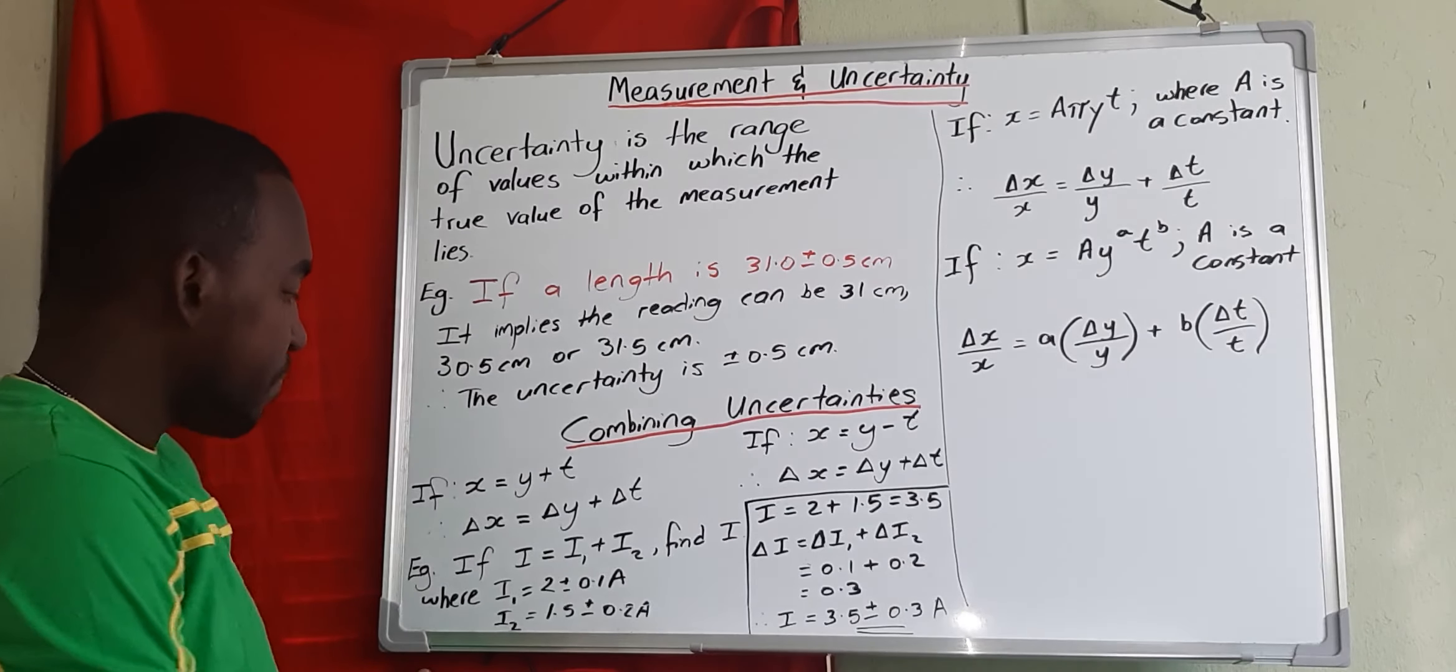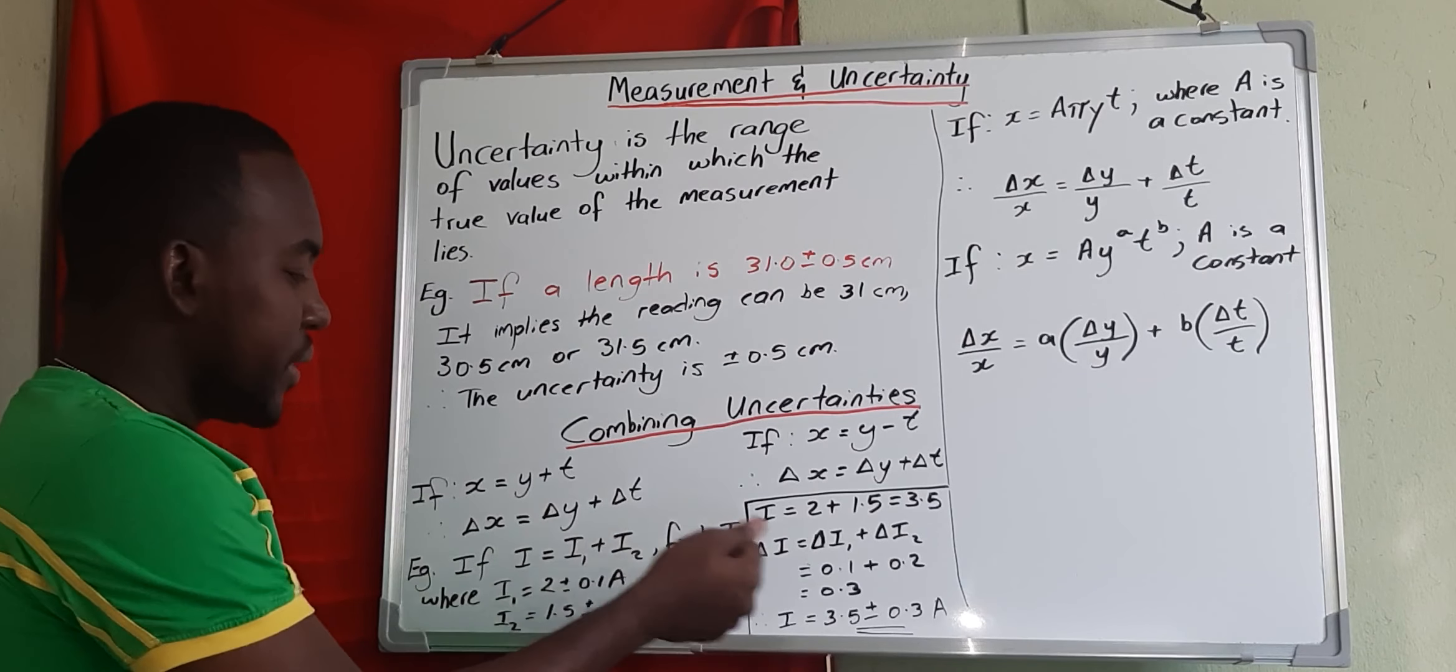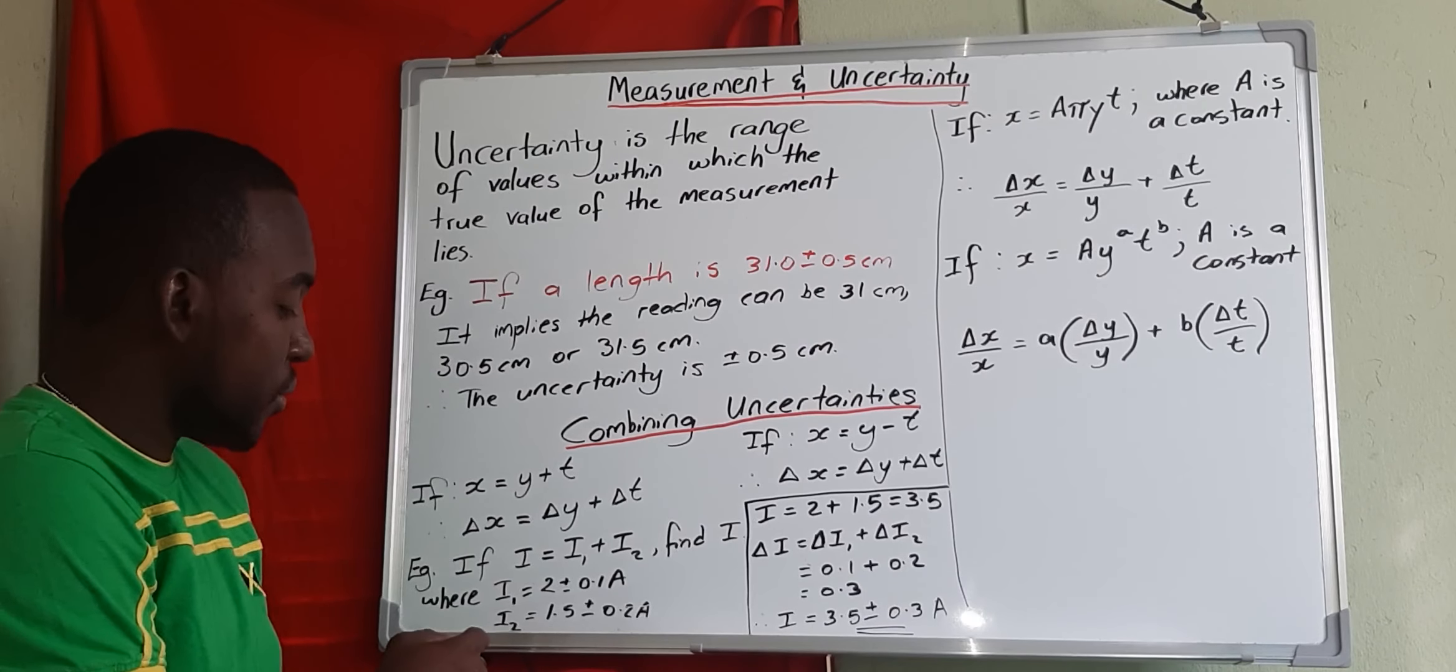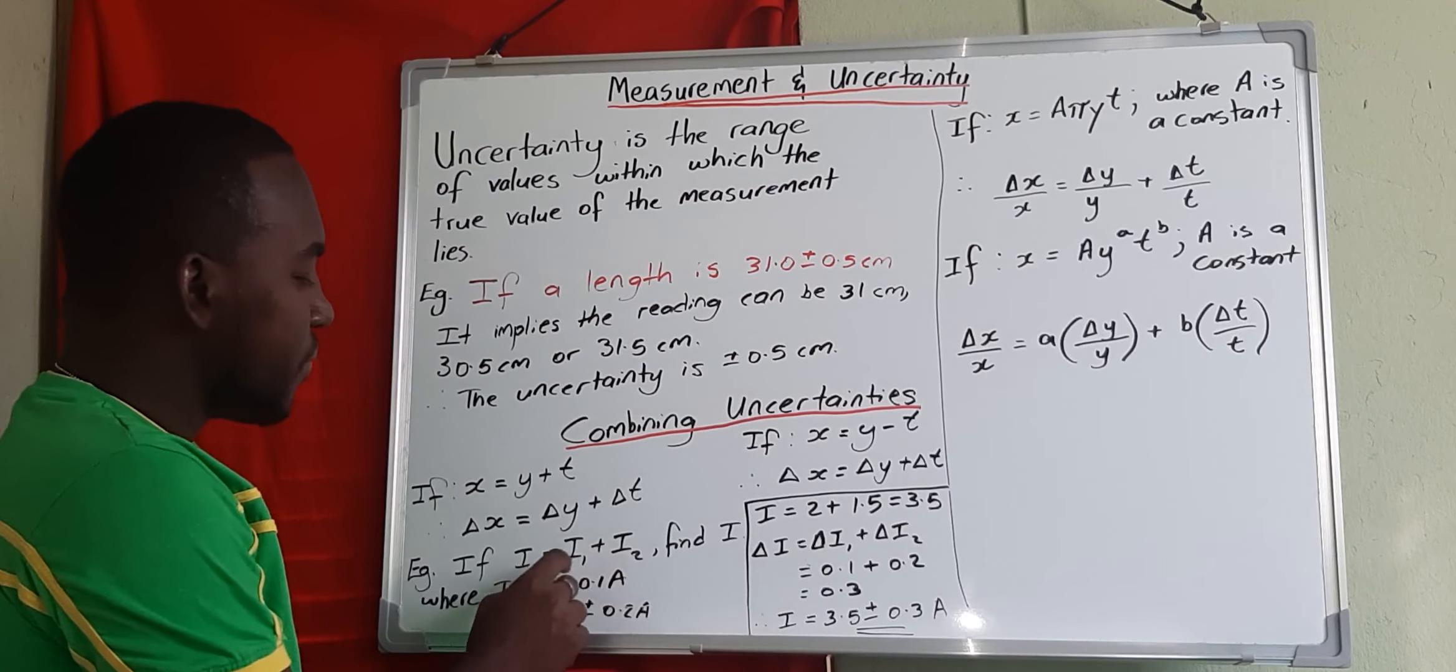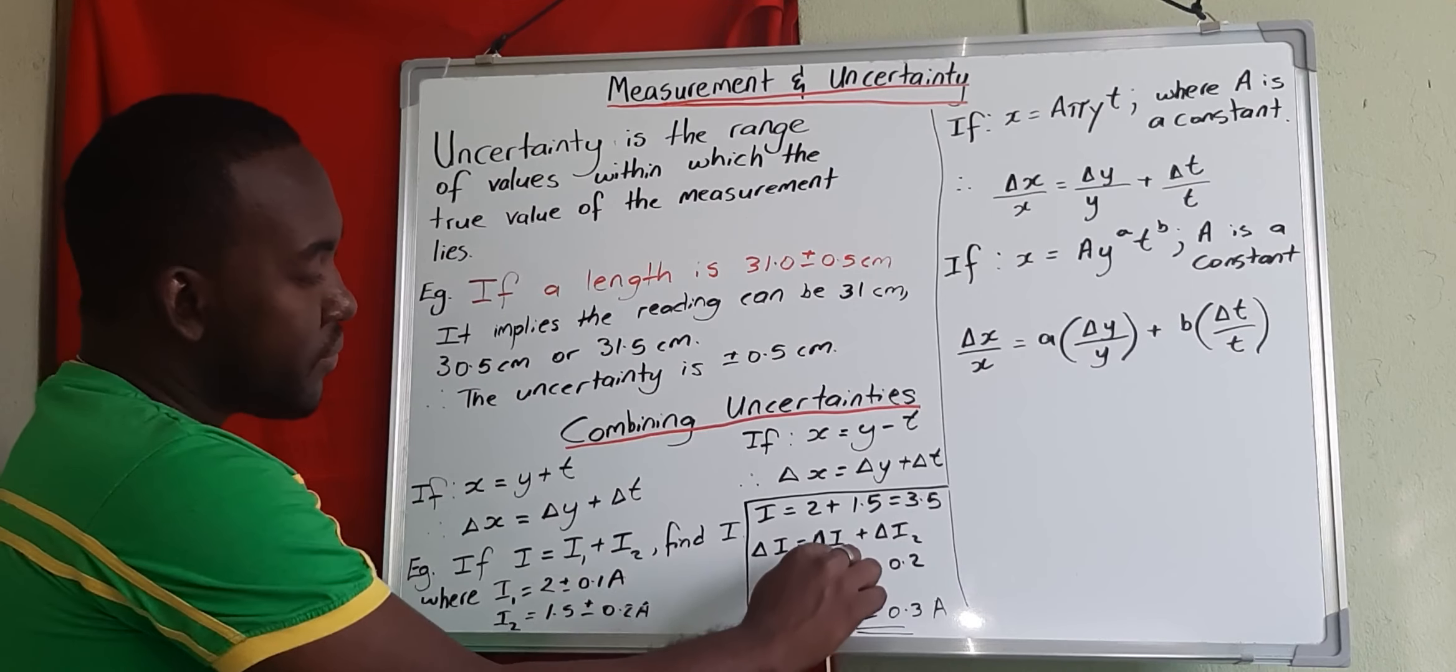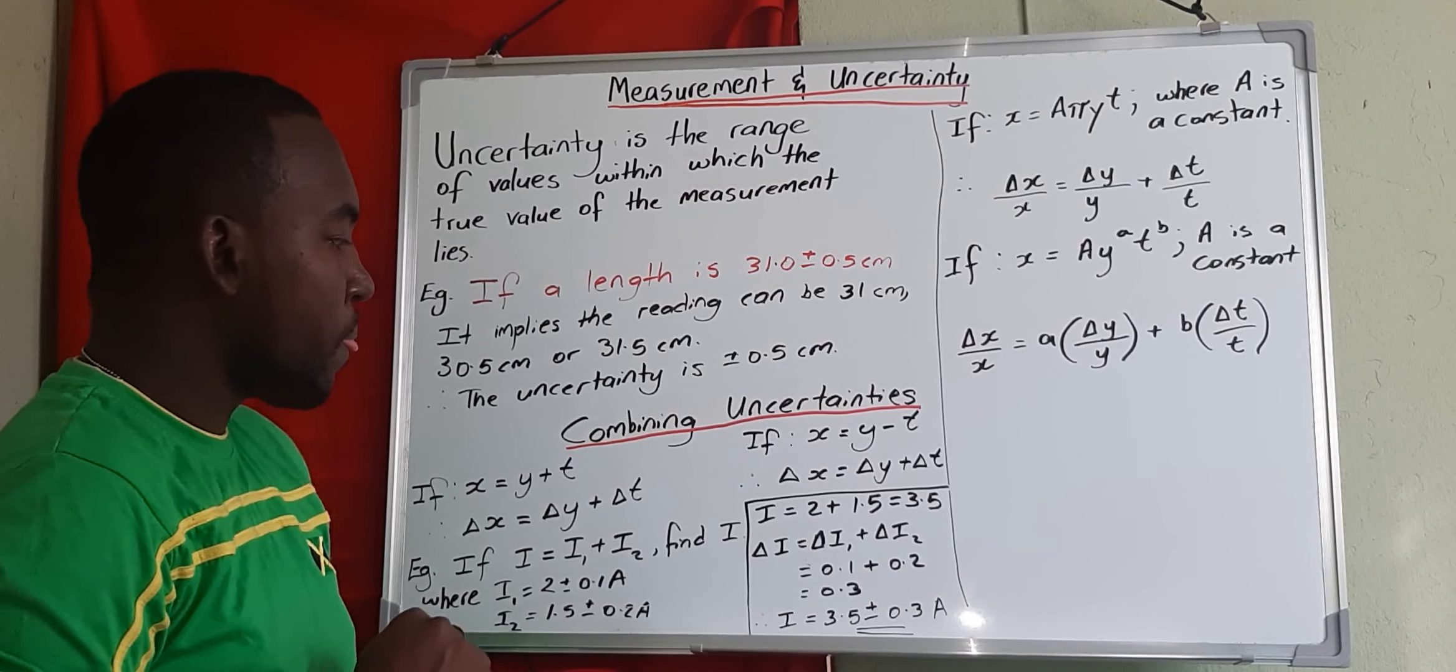For example, if we have current i equals i1 plus i2, and if i1 is 2 and i2 is 1.5, then i would be 2 plus 1.5 and we get i to be 3.5.